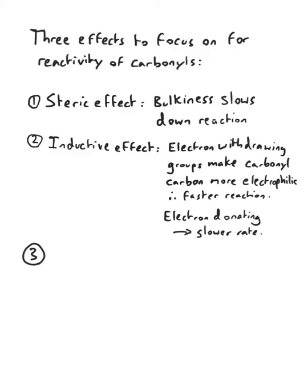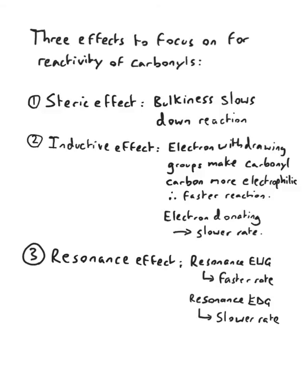Third is the resonance effect. If you have an electron-withdrawing group with respect to resonance you will have a faster rate, whilst if you have an electron-donating group with resonance it will be a slower rate.